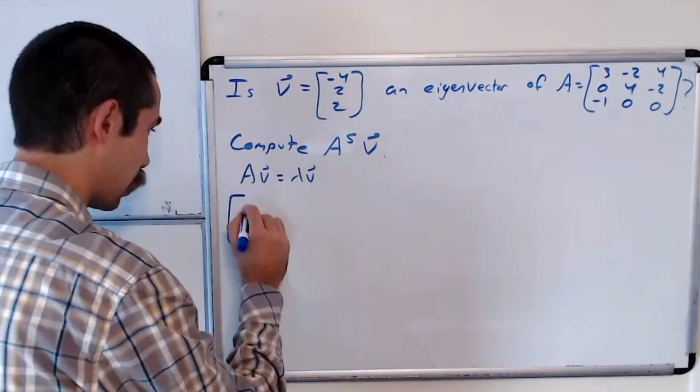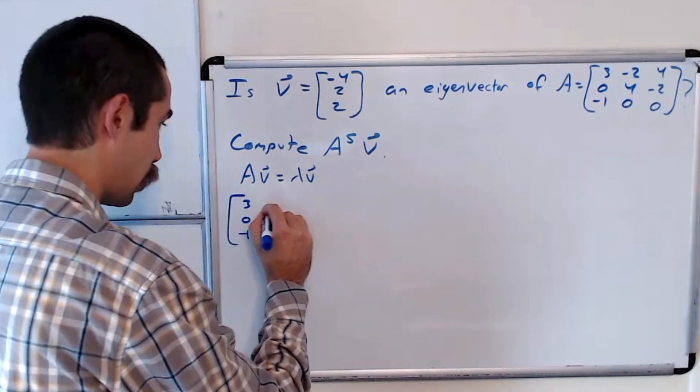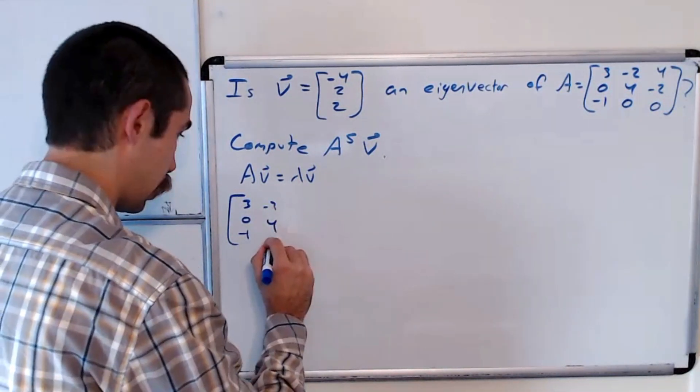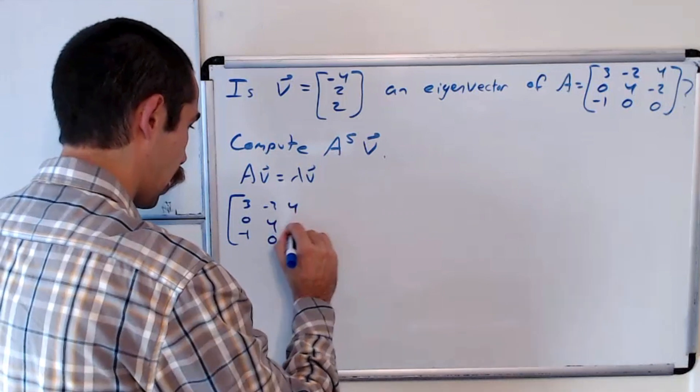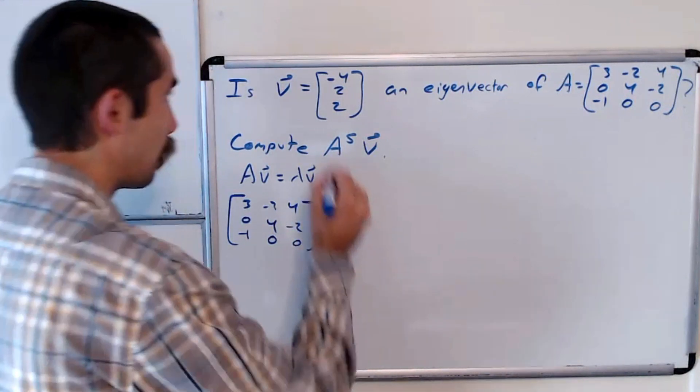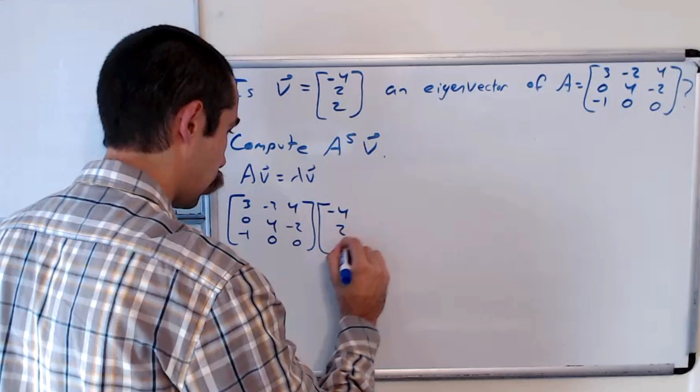So let's compute A times V, so that's 3, 0, negative 1, negative 2, 4, 0, and 4, negative 2, 0, times V, which is negative 4, 2, 2.